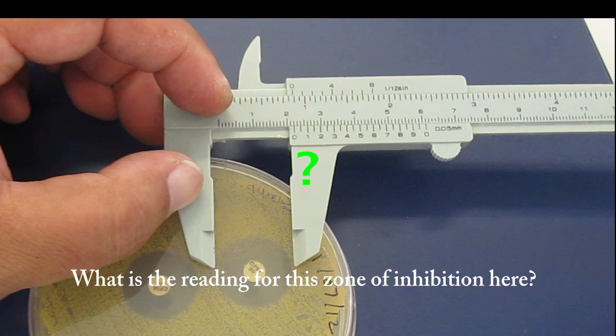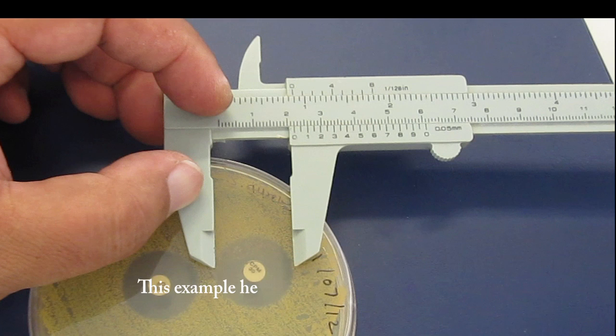What is the reading for the zone of inhibition here? This example here shows a reading of 22.1mm.